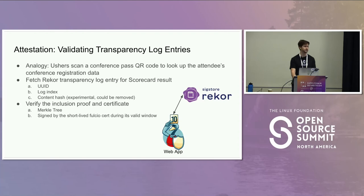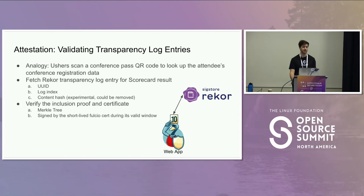Sigstore does offer SLAs for its other features, and there's no reason Scorecard can't include the unique index when sending results over. When we get a transparency log entry from Rekor, we verify the inclusion proof. Since the transparency log is a Merkle tree, it's a pretty standard inclusion proof. We also check the certificate — since we're using Cosign, we get a 10-minute certificate from Fulcio. We make sure that when the results were signed and included in the transparency log, all the timestamps line up.